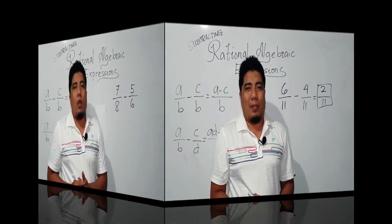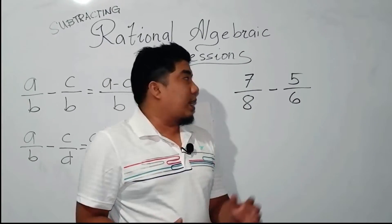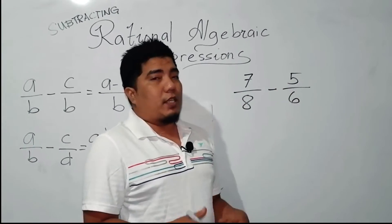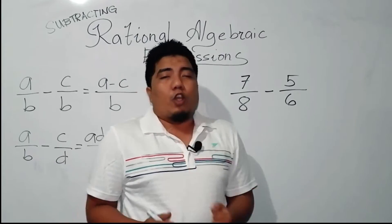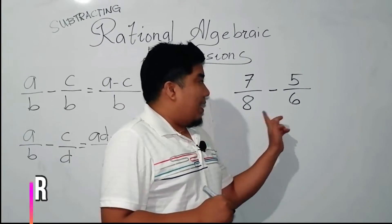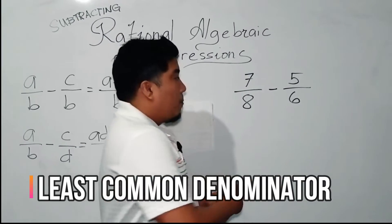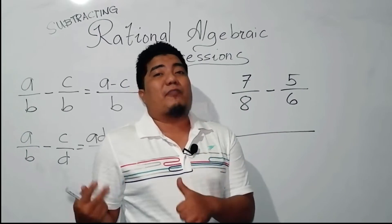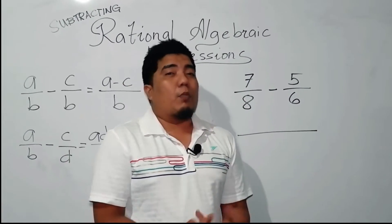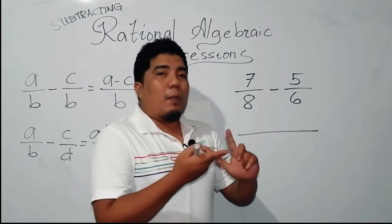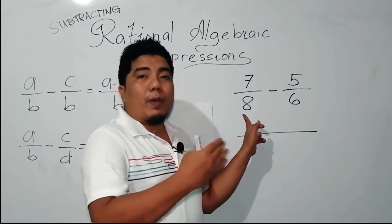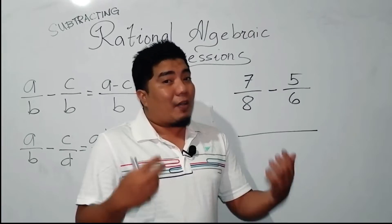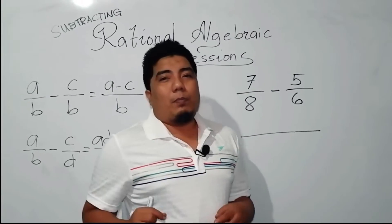Let's consider another example. We have 7 over 8 minus 5 over 6. They have different denominators, so what you do here is first get the LCD of these fractions. How do we get the LCD? There are two ways. The first one is using the prime factorization, and then those factors are being multiplied. The second one is by the use of counting — you count by 8, and you count by 6. What is the first number in which 6 and 8 have in common? That will be the LCD. For 8 and 6, the first number they have in common is 24, because 24 can be divided by 8, and 24 can also be divided by 6.